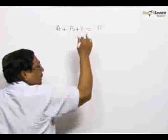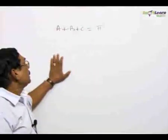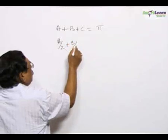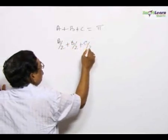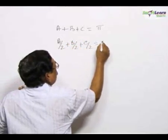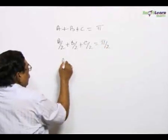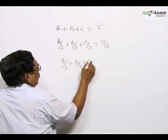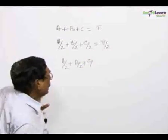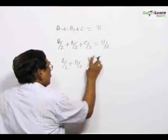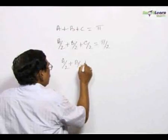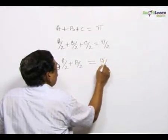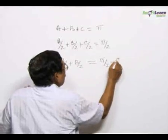Of course, you can write pi or 180 degrees. Then you will have A by 2 plus B by 2 plus C by 2 is equal to pi by 2. Or, taking C by 2 to the other side, A by 2 plus B by 2 is equal to pi by 2 minus C by 2.